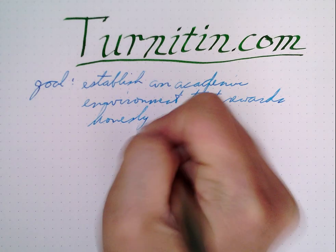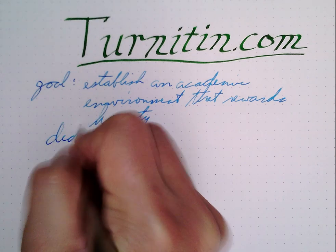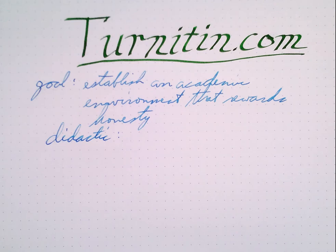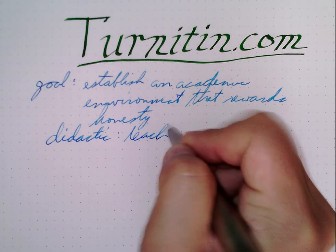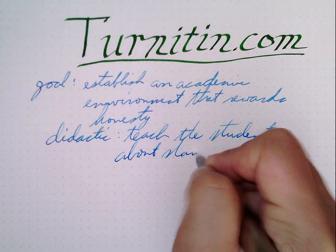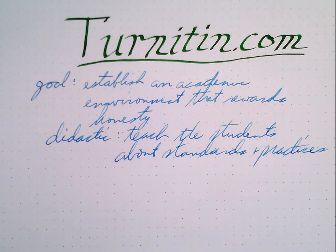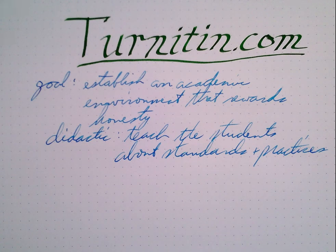That means we need to punish dishonesty. I take a really didactic approach to using Turnitin.com, which means I'm trying to teach the students about the standards, because I want them to understand why certain things are considered dishonest. I will show them Turnitin reports and explain borderline cases. Ultimately, this gives honest students assurance that others aren't taking shortcuts — that the teacher is on it.